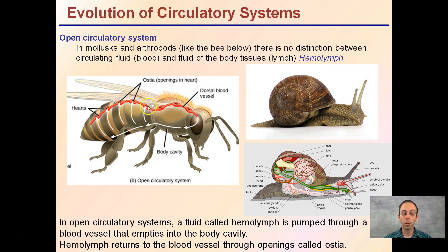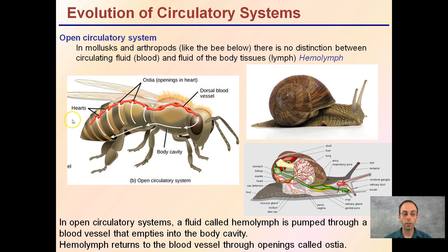What makes this so primitive is that there are multiple hearts and mixed fluid mixtures. The openings, called ostia, are numerous — not just one. Blood can flow in various directions, making the system quite unorganized.